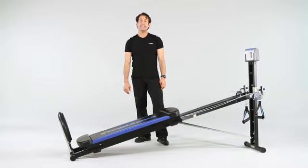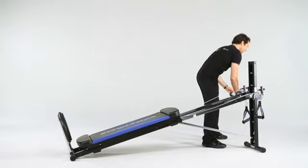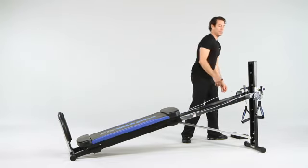When folding your Total Gym XLS, begin by taking the training deck and removing it from the top of the column. Set it off to the side so that it's out of your way.